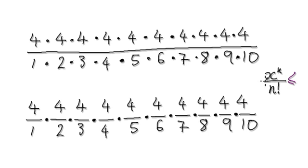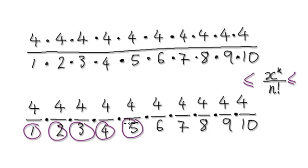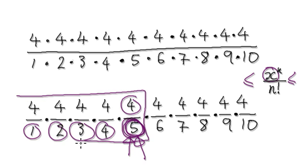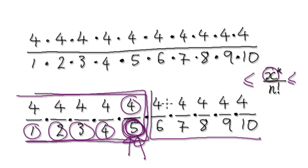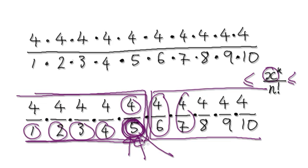The idea is that we're going to try and track this in between two things, and we need this number M — the first denominator where it's bigger than the actual x itself. So this is the first one here. The idea later on is that we're going to cut it like this. This is our magical M number, a very important number that we will need.